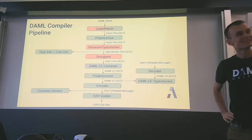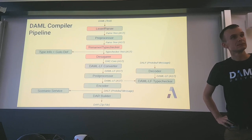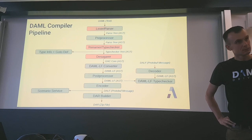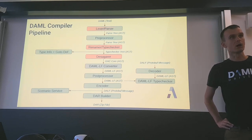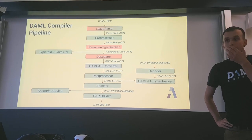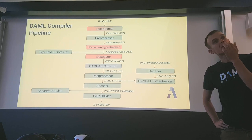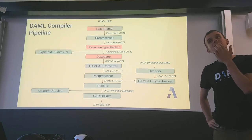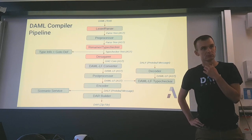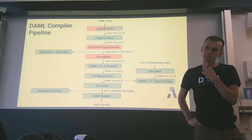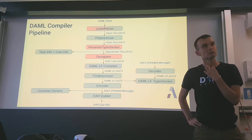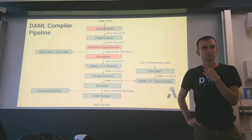A question: you said when you have a cache ID, you generate a new cash ID — do you have refined types of some sort? That is only if your choice is consuming; a non-consuming choice keeps the old contract. The point is it's a runtime error, not a type error, even for consuming choices. We don't have linear types — it's just a runtime error: 'this contract has been archived.'